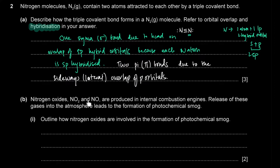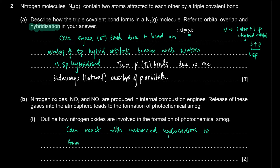Nitrogen oxides NO2 and NO are produced in internal combustion engines, and their release leads to photochemical smog. Oxides of nitrogen can react with unburned hydrocarbons from fossil fuels in combustion engines to form peroxyacetyl nitrate (PAN), which is a component of photochemical smog.